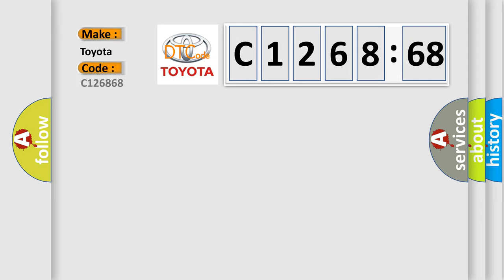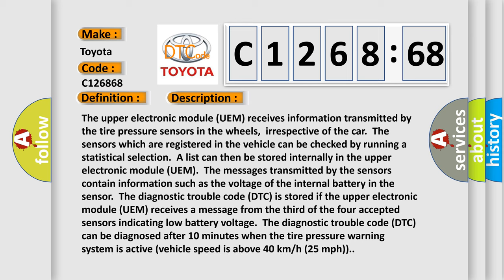So, what does the diagnostic trouble code C126868 interpret specifically for Toyota car manufacturers? The basic definition is: tire pressure sensor low battery voltage.